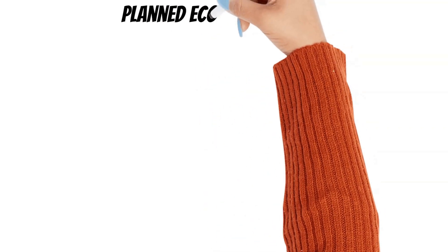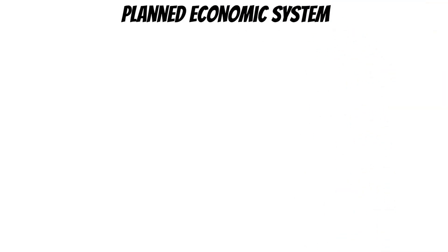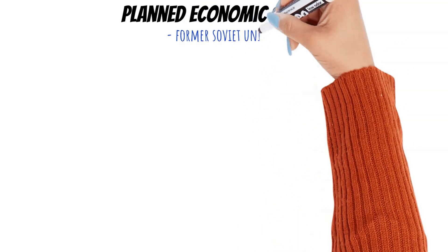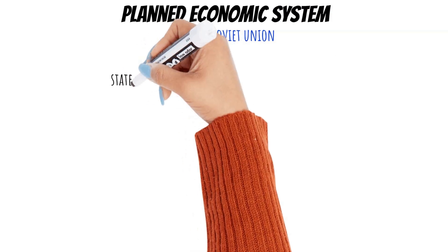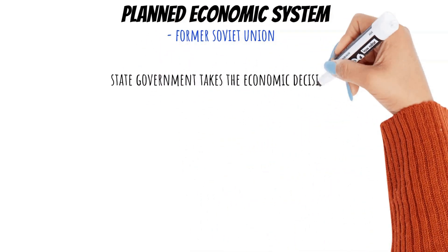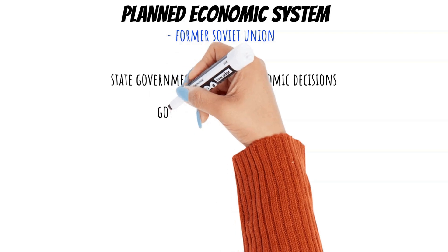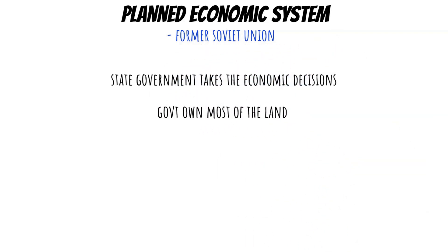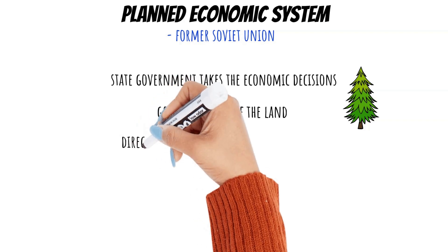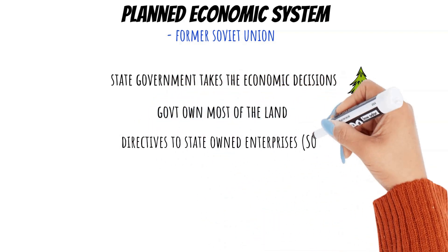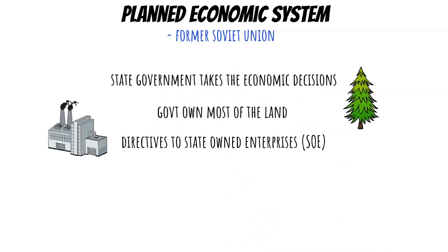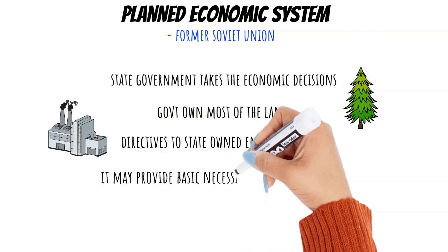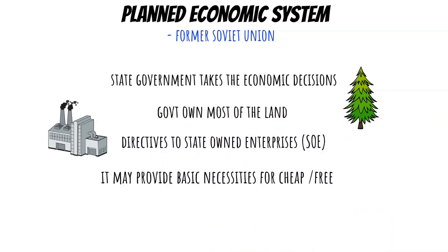Now, planned economy, also called collectivist economy, was seen in the former Soviet Union. It is an economic system where the state government makes the economic decisions. The government answers the three economic questions and owns most of the land. It also employs workers and gives directives to state-owned enterprises, or SOE for short. It controls the price level. The major advantage here is that it may provide basic necessities cheaply or even for free.